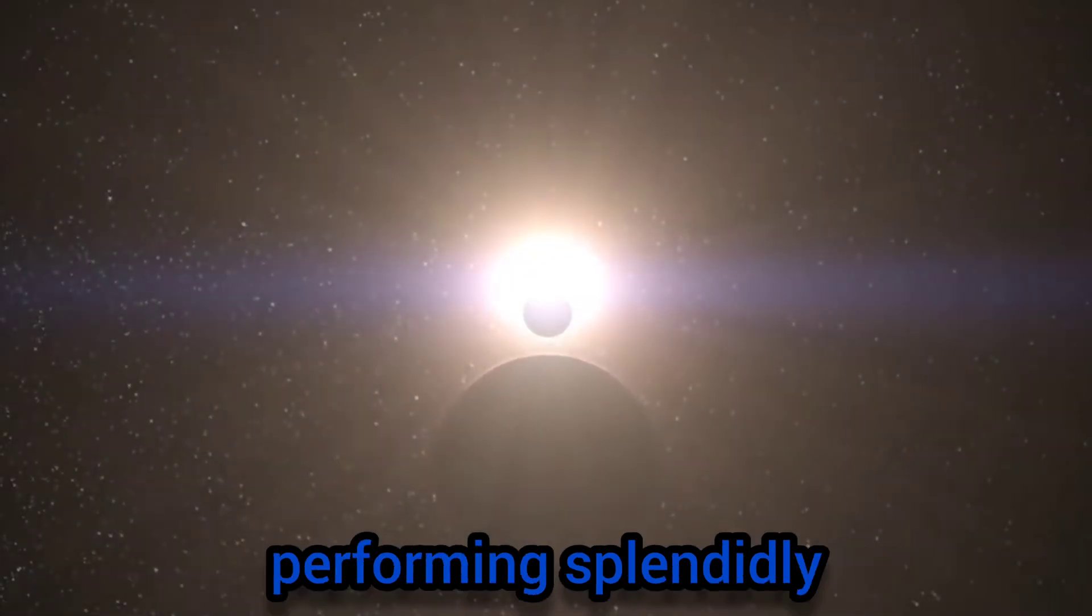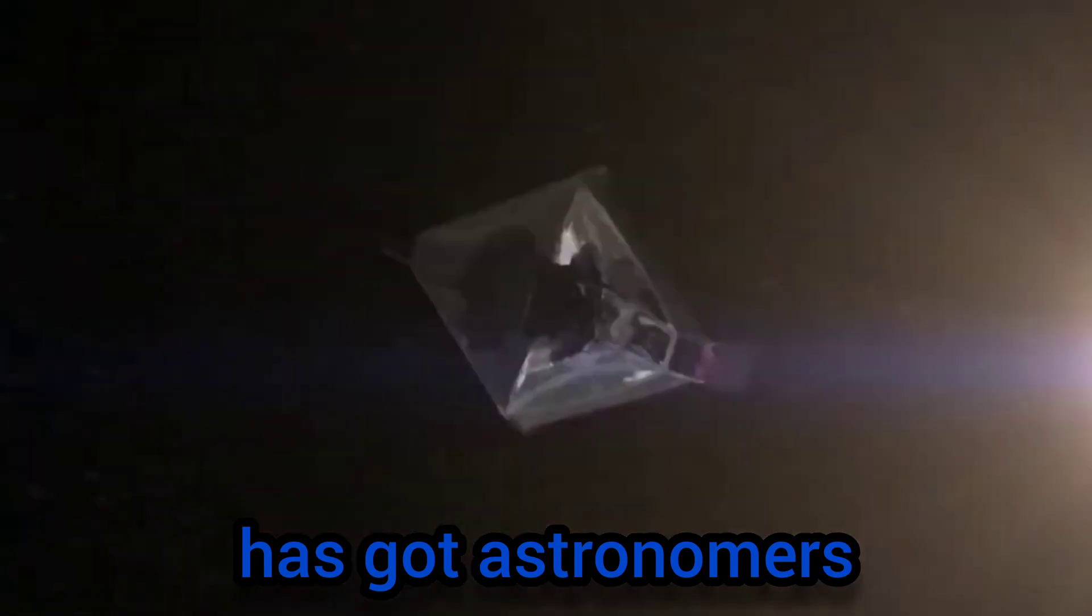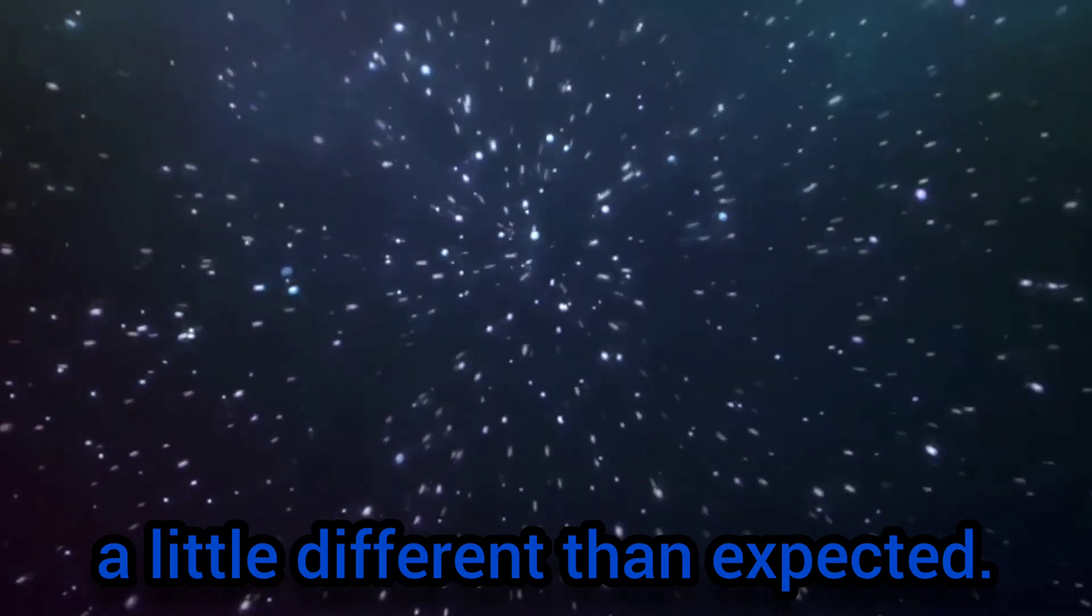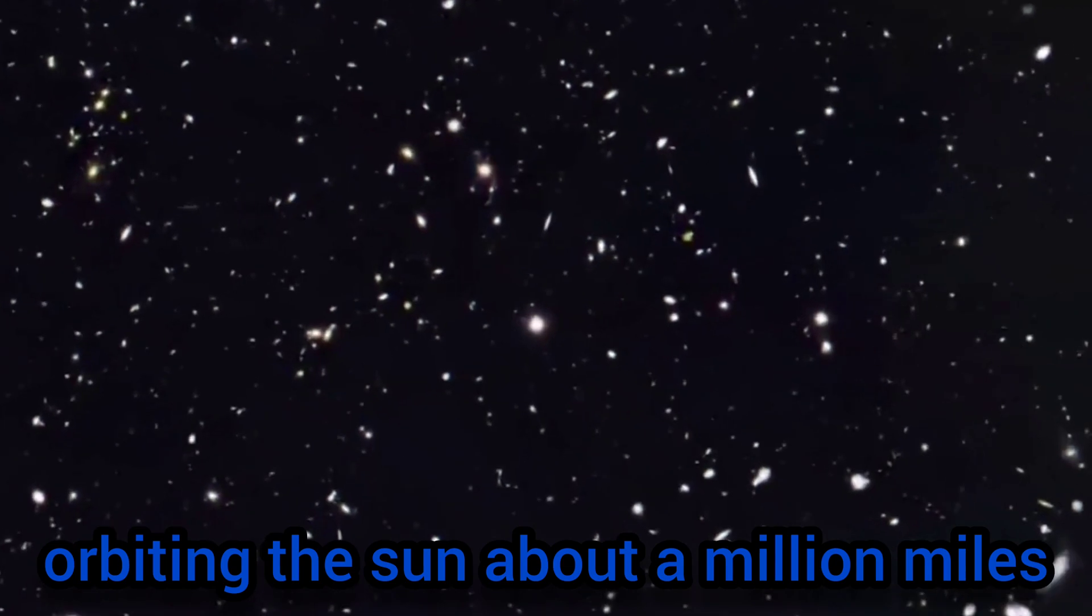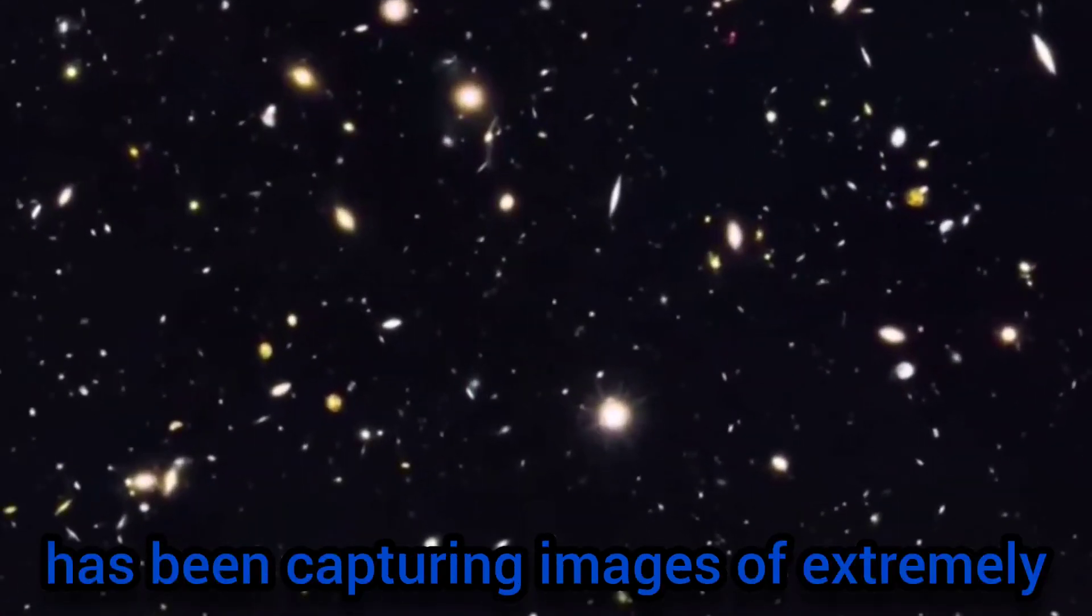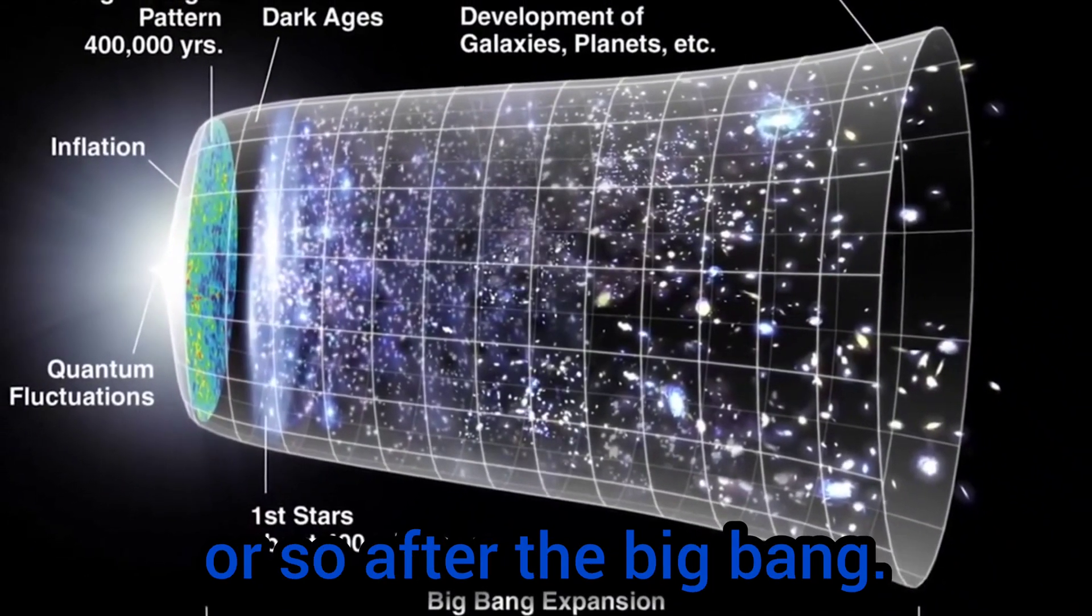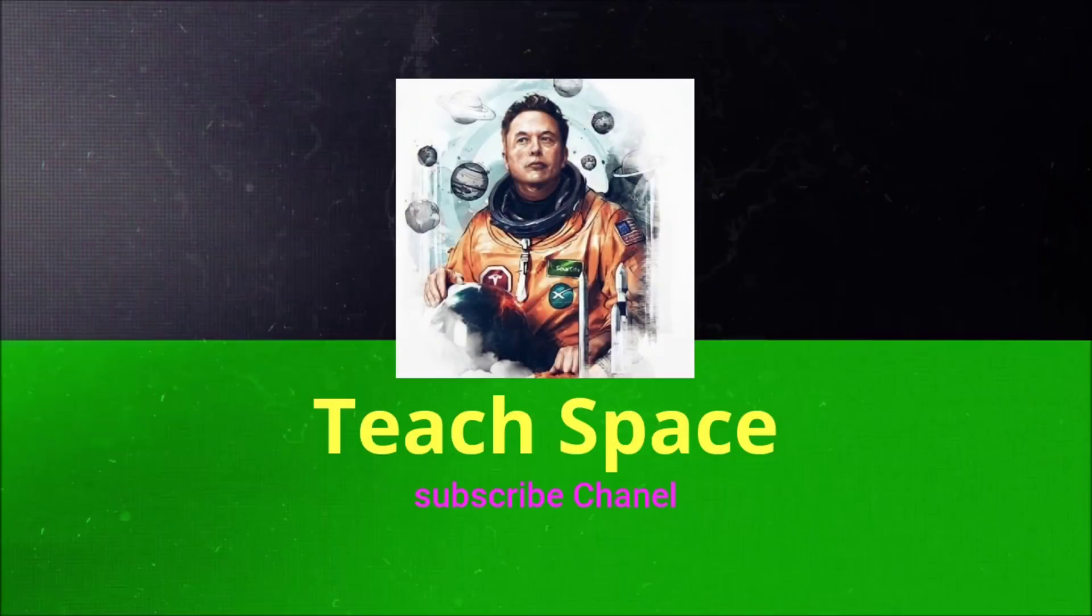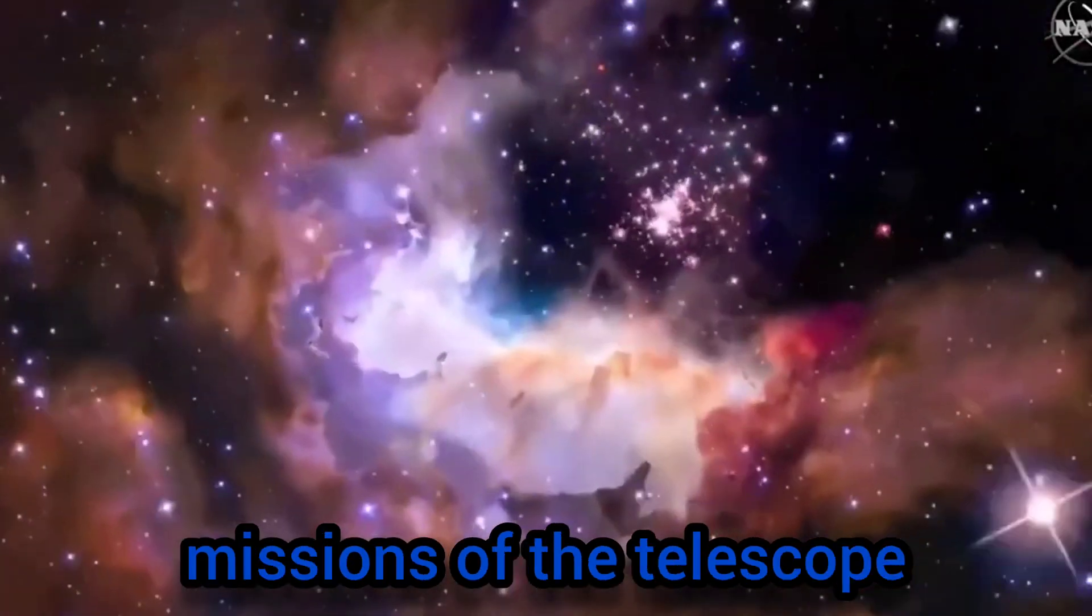The James Webb Space Telescope, performing splendidly as it examines the universe, has got astronomers scratching their heads. The very distant universe looks a little different than expected. The telescope launched eight months ago and orbiting the sun about a million miles from Earth has been capturing images of extremely faint galaxies that emitted their light in the first billion years or so after the Big Bang.